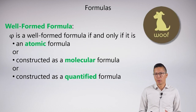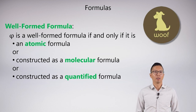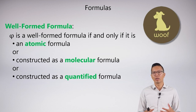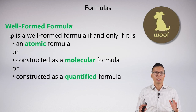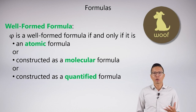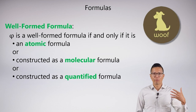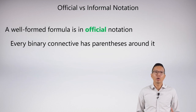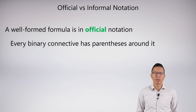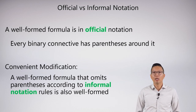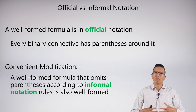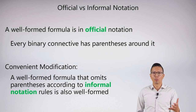Now that we know these things, we can define a well-formed formula very easily. Something is a well-formed formula if it's atomic, molecular, or a quantified formula. What we generally care about is whether something is well-formed — that is, whether it follows these basic syntactical rules. A well-formed formula is in official notation, meaning every binary connective has parentheses around it. But just like in sentential logic, we'll also allow informal notation, and I'll call informal statements well-formed even though technically they may not be.